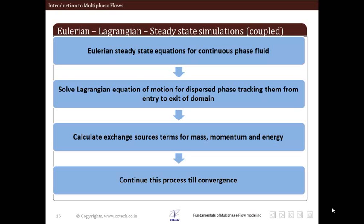Once we have obtained the trajectory and velocity for the dispersed phase, the next step is to calculate the mass, momentum, and energy source terms. We put them back into the governing equations for the continuous phase and solve the Eulerian equation again. We continue this process until we get a steady, non-changing solution for both the trajectories and the velocity field of the continuous phase — that is our steady-state convergence.